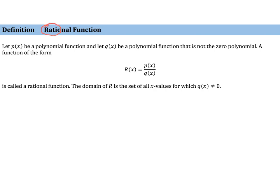So a rational function is a ratio of two polynomial functions. We have a polynomial, and then we're dividing by a non-zero polynomial.